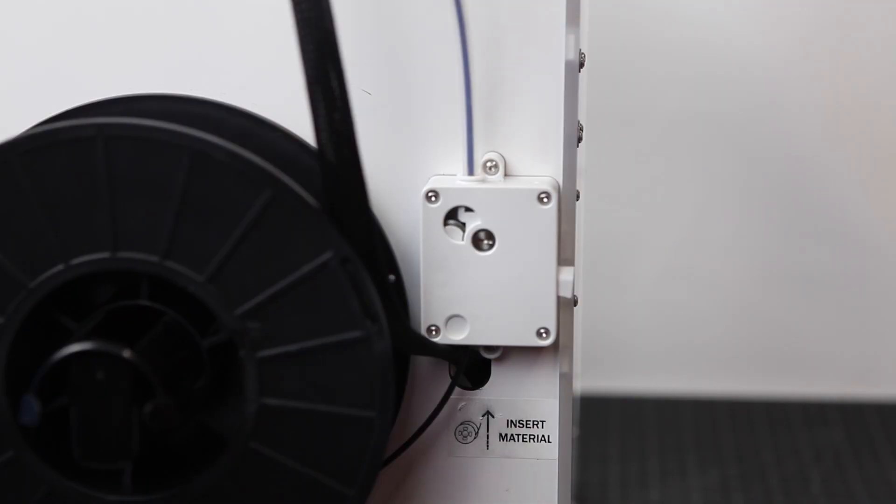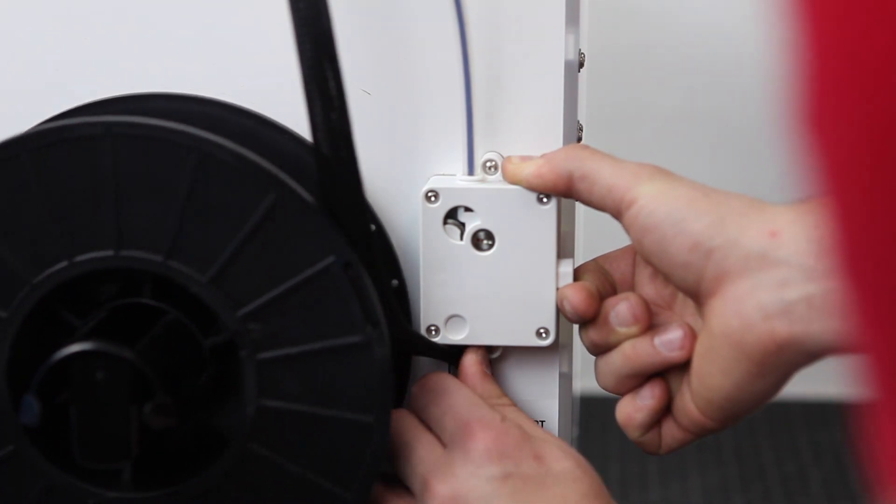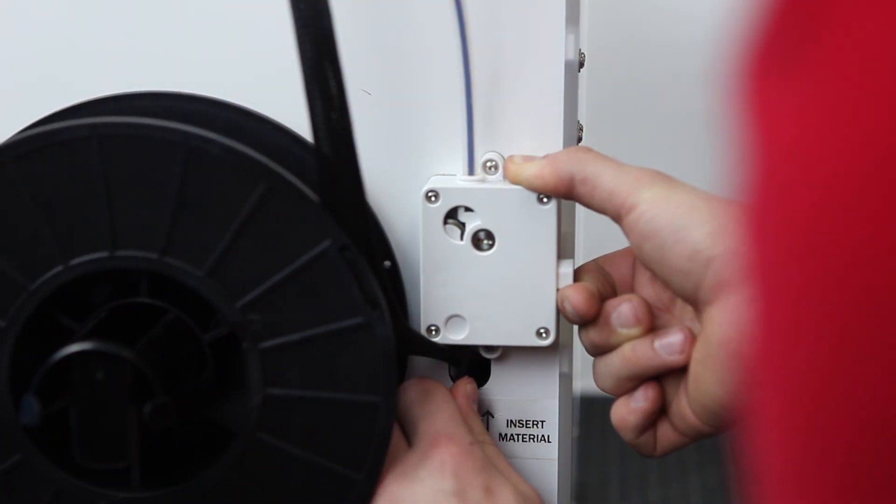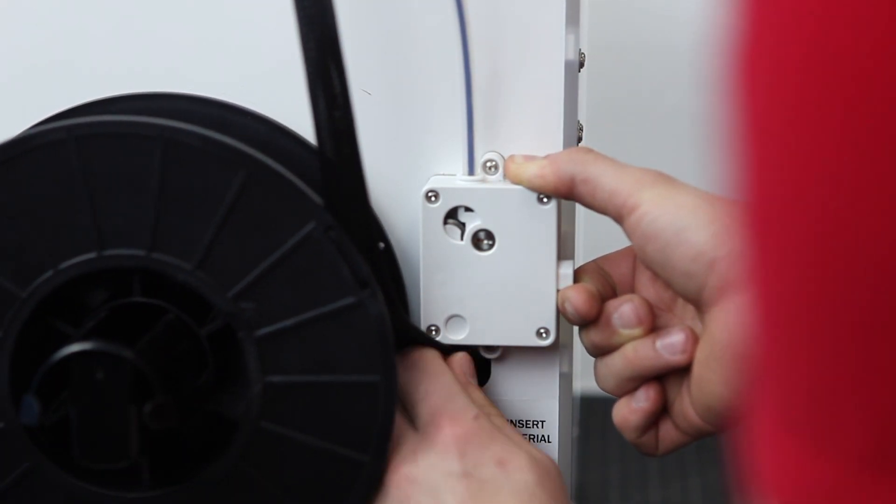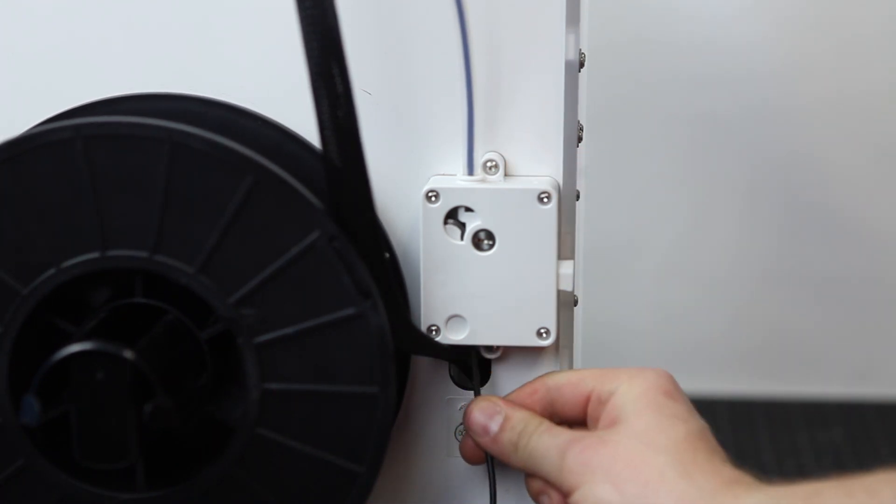To check if your nozzle is clogged, disengage the extruder gear lever and push filament through by hand. If it curls, is hard to push through, or doesn't come through at all, the nozzle is clogged. It doesn't take much force to get it through, so don't press on it too hard.